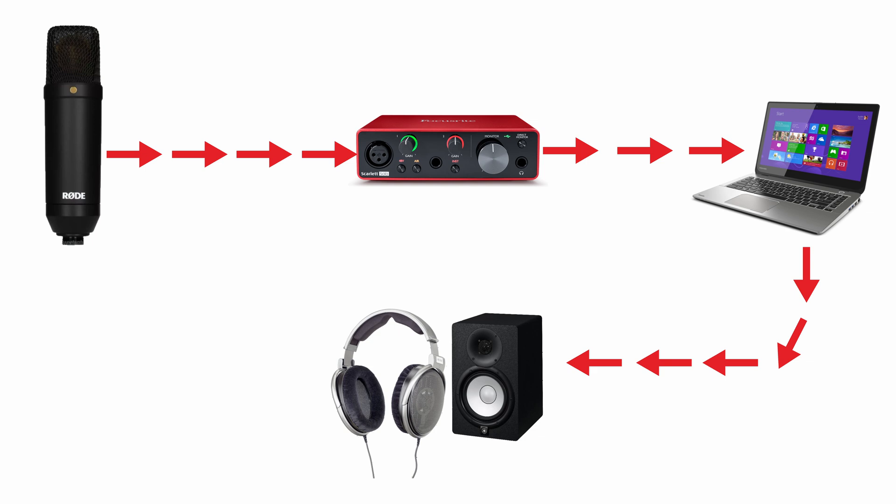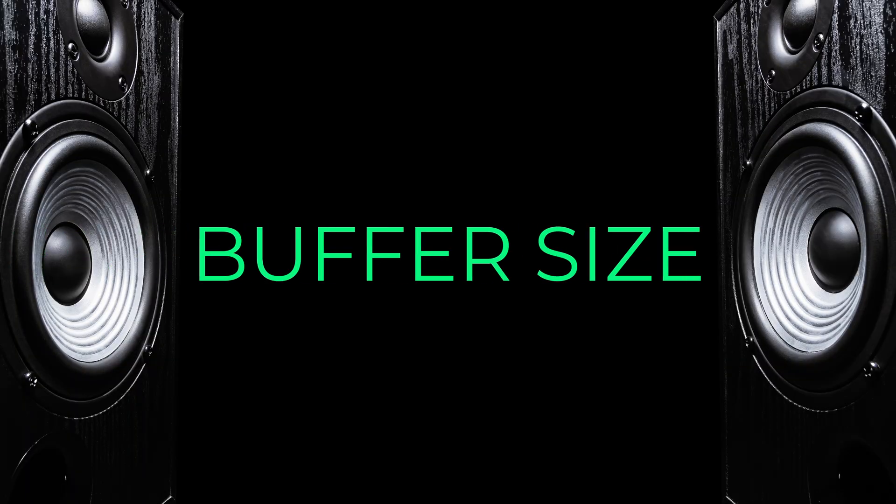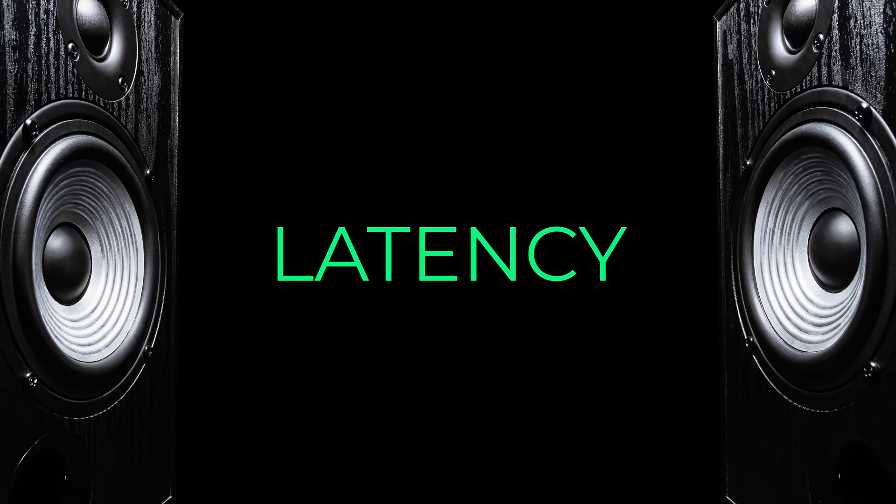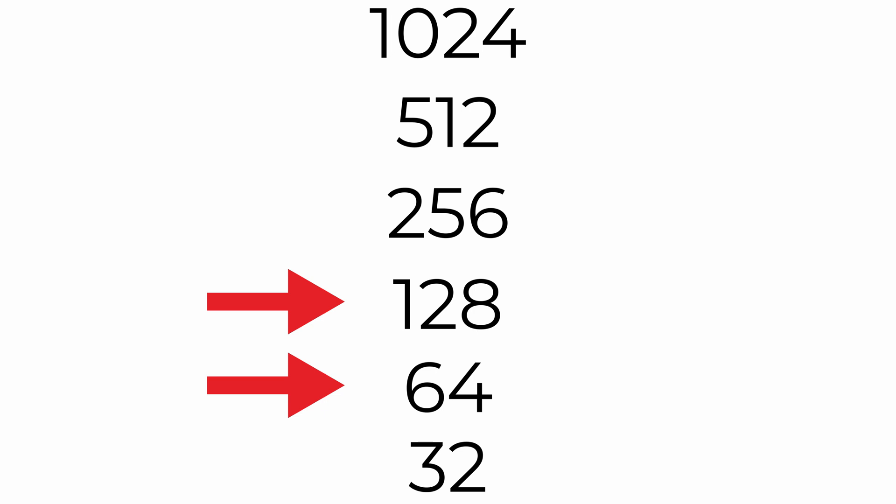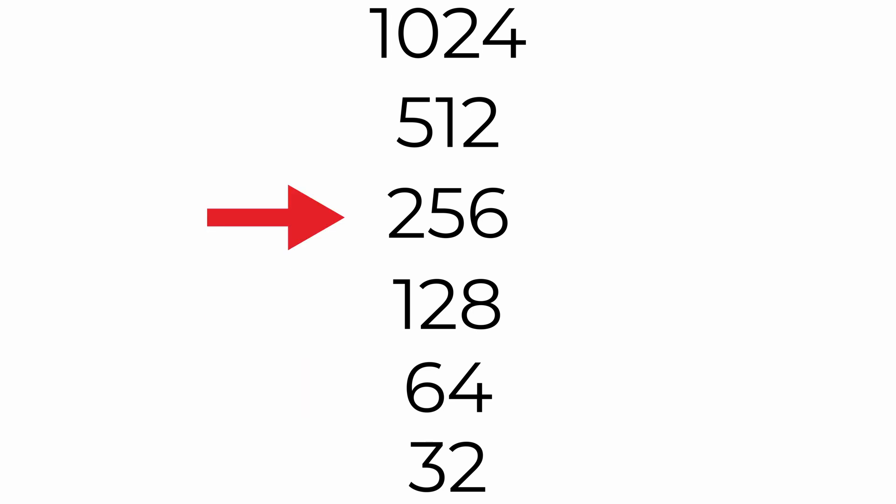This applies when experiencing latency, which is a delay in processing audio in real time. So when should you change it? You would want to change your buffer size if you're experiencing latency. Basically, if you're recording live voiceover and you're hearing what you're saying into the mic milliseconds or even seconds later in your headphones, you'd want to adjust this. Lowering your buffer size to something like 128 or 64 will decrease the latency you're hearing, though it will be harder on your computer depending on its processing power. While increasing the buffer size to something like 256 or above will increase the latency, but it will be easier on your computer.